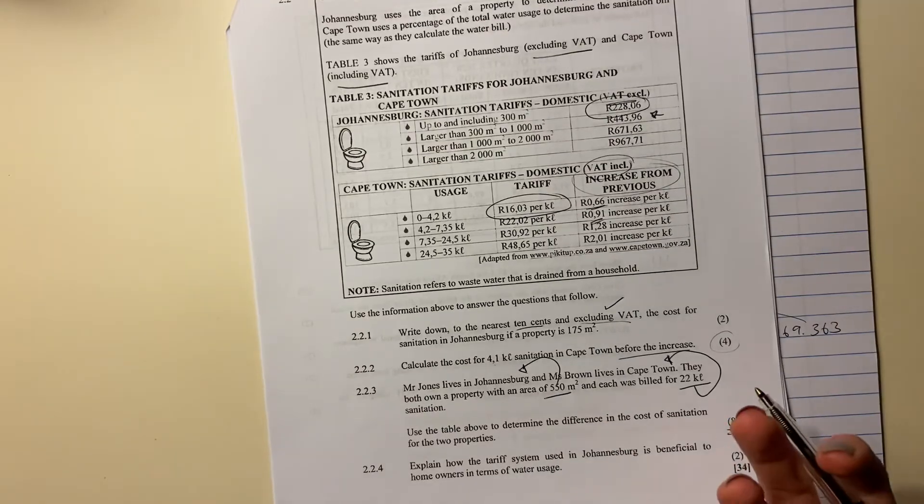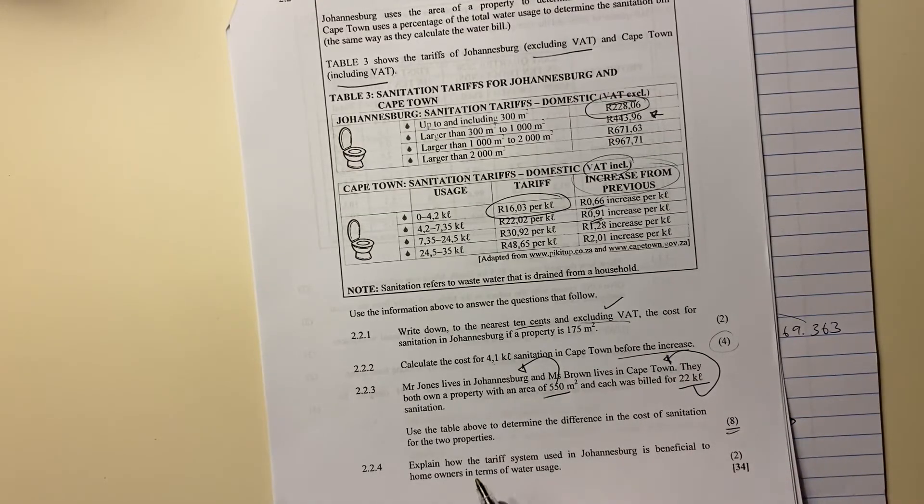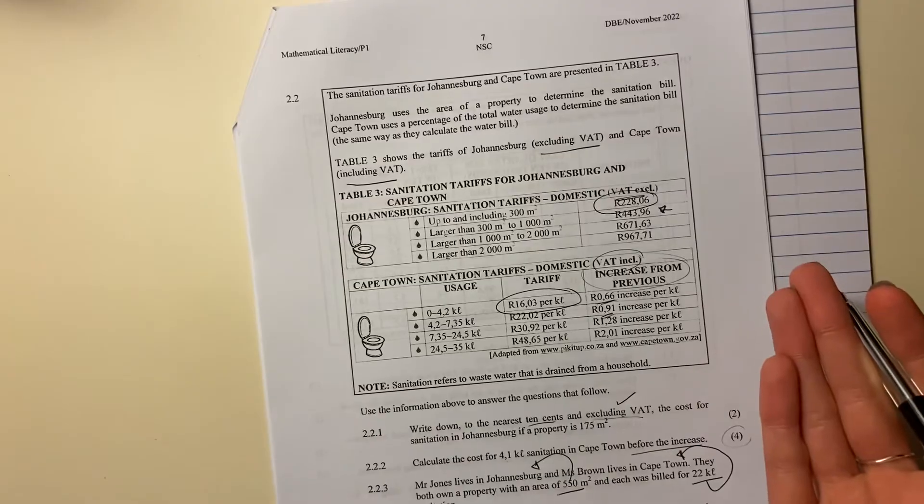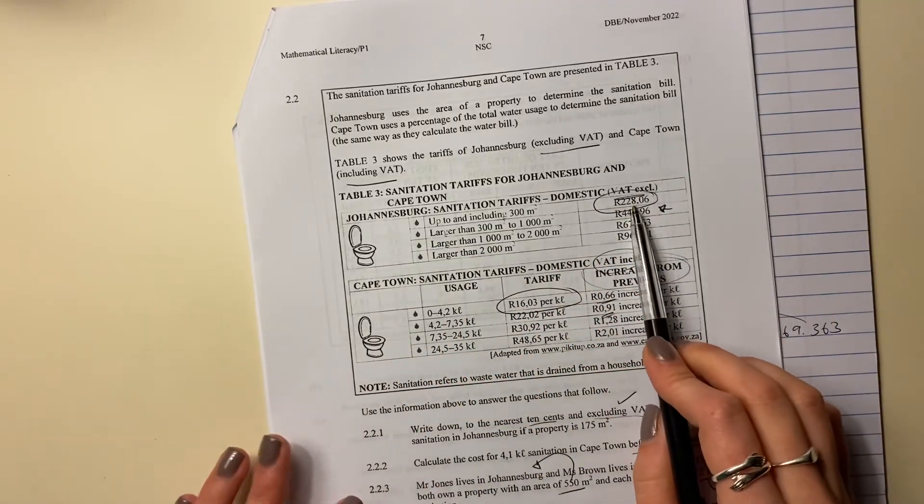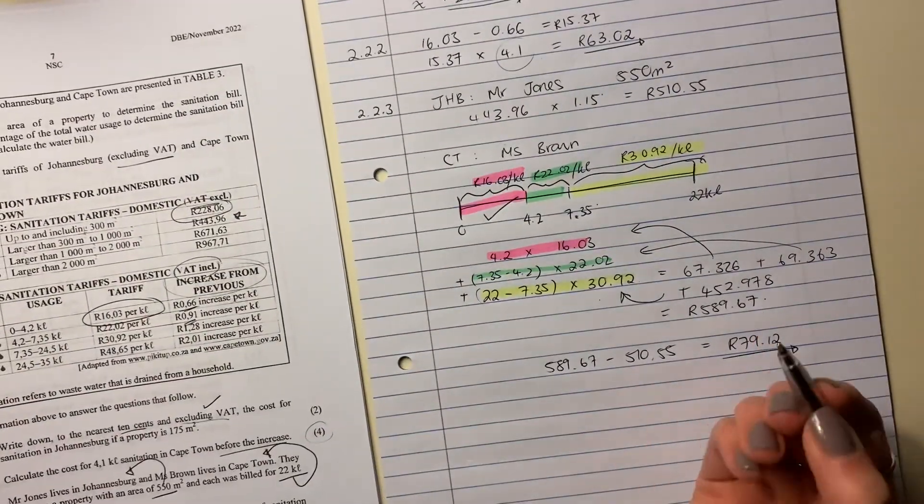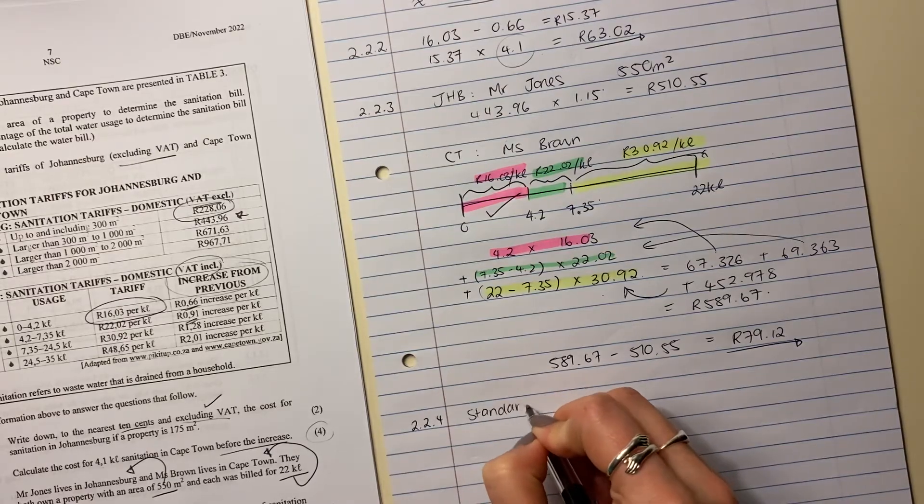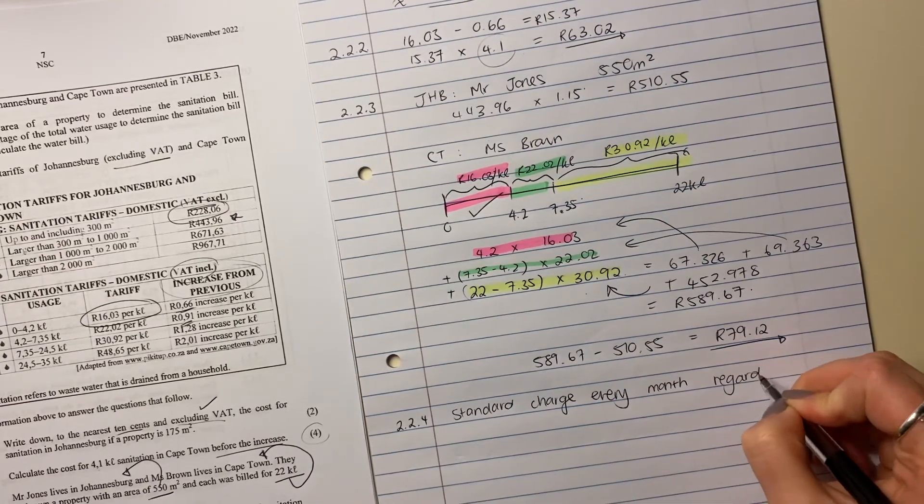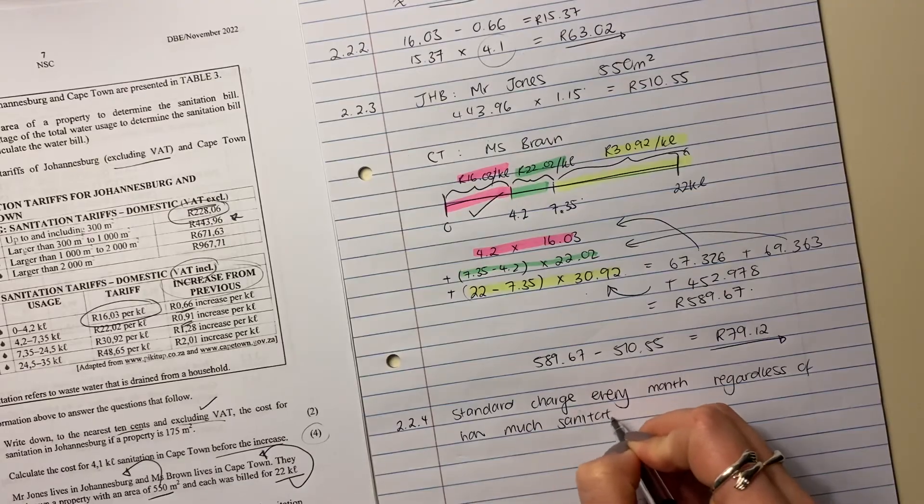Let's now go on to the last question, which is like an explain question. It's using your common sense. Think it through. Explain how the tariff system used in Johannesburg is beneficial to the homeowners in terms of water usage. There's many things you could say here. To me, the most beneficial thing is regardless of how much water or sanitation you use, you get charged the same amount. So one month you could use a huge amount and you'd still be paying 228.06. The next month you could use little, and you're still being charged the same amount. So that's effectively the benefit. The benefit, you can write it in different ways. I'm going to say that it's a standard charge every month, regardless of how much sanitation is used.